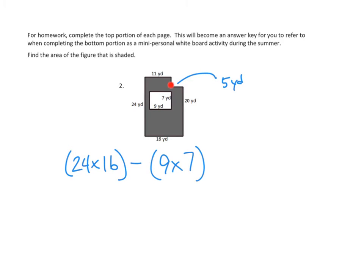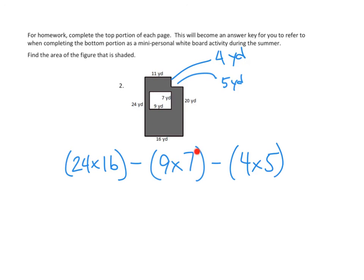Now we also have to figure out the length of this side. The whole side is 24 yards, and we can see that most of the side — everything except for this part — is 20 yards. So how many more yards would we need to get from 20 yards all the way up to 24 yards? We would need 4 more yards. So that little part must be 4 yards. That gives us the size of the rectangle to carve out: 4 by 5. We start with the full rectangle, carve out the piece in the middle and the little corner piece, and that gives us our shaded area.